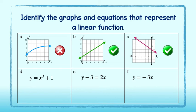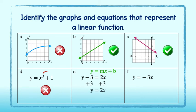Let's take a closer look at the equations. In d, x has a degree that is not 1, so I know right away that it does not represent a linear function. In e, each variable only has a degree of 1, which is good, but it is not in the form y equals mx plus b. This doesn't mean it's not a function, but let's manipulate this equation by adding 3 to both sides. This gives us y equals 2x plus 3, which is in y equals mx plus b form, and therefore it is a linear function.